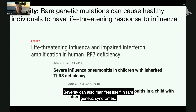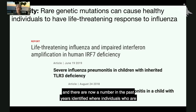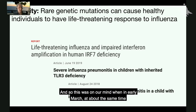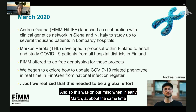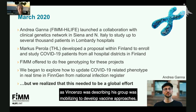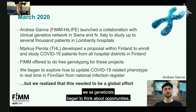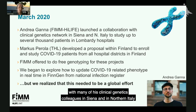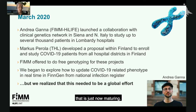Severity can also manifest itself in rare genetic syndromes. There are now a number identified where individuals who are otherwise perfectly healthy have a rare genetic mutation that, when exposed to what's a normal infection for most of us — such as influenza — they develop a life-threatening complication. And so this was on our mind when, in early March, we as geneticists began to think about opportunities, and Andrea's group was mobilizing to develop vaccine approaches.